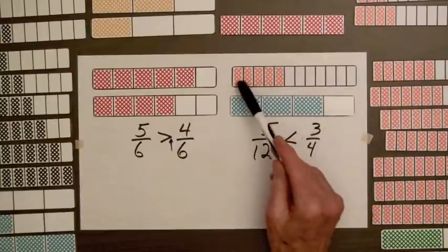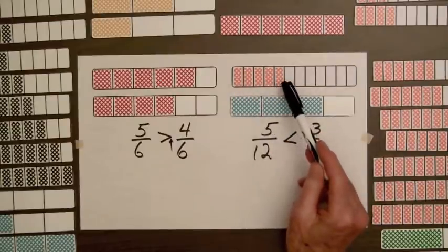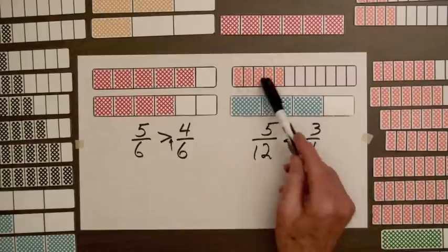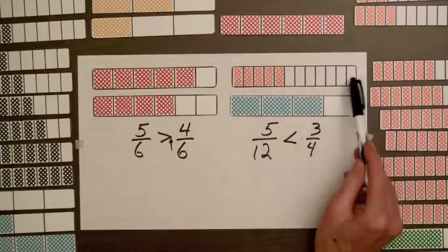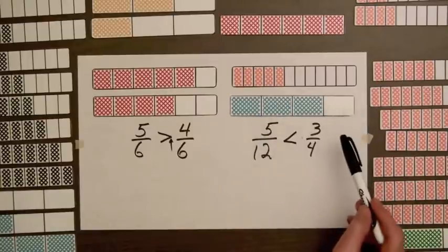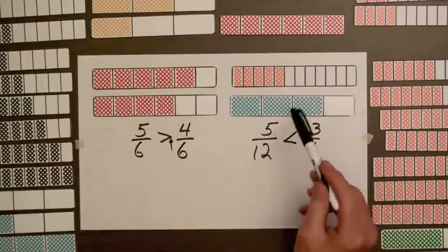Now for these two bars, the five parts turned out to be less than the three parts, the parts of this bar here are smaller. So we divided something into twelve parts, they're smaller than if we divide the bar into four parts.